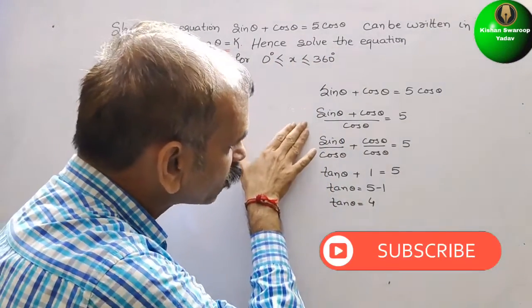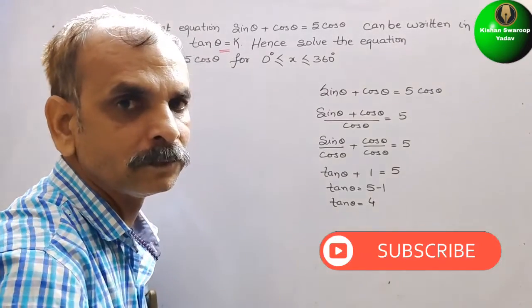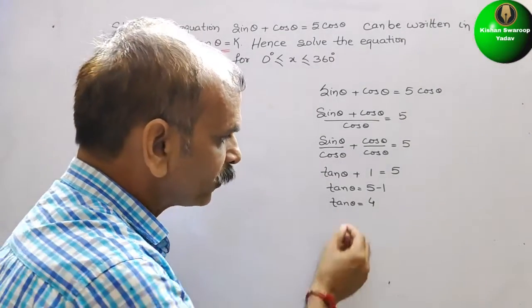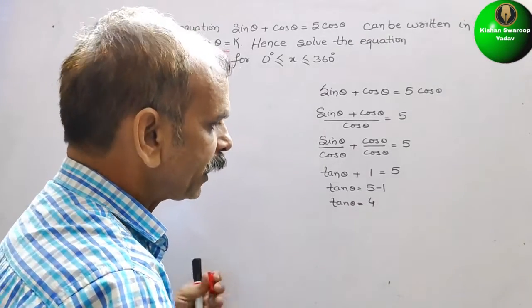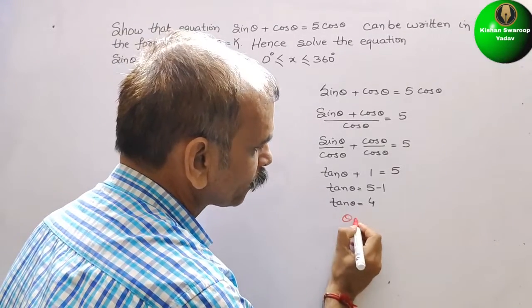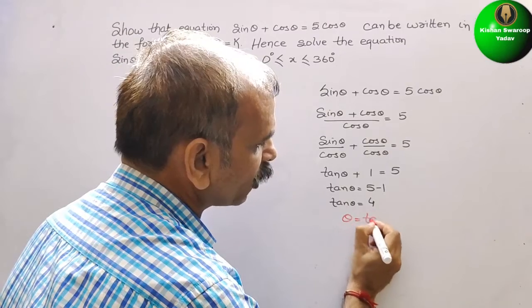We have already solved from here to here. So, now from here we will take out theta. So, theta is nothing but tan inverse of 4.